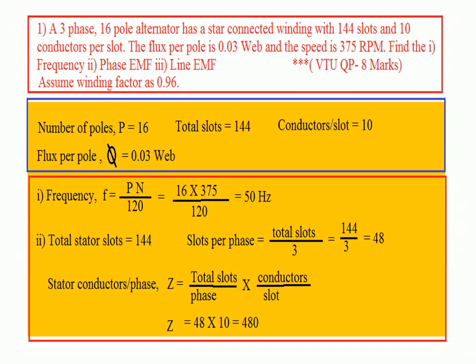For number 2, in this problem total number of slots are given as 144. In the previous problem, slots per pole were given; now in this problem, total slots are given directly. So you go for slots per phase: total slots divided by 3 = 144/3 = 48. After getting slots per phase, concentrate on conductors per phase: stator conductors per phase = slots per phase × conductors per slot = 48 × 10 = 480.